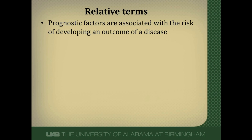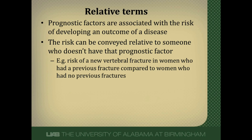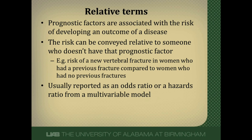Prognostic factors are associated with the risk of developing some outcome from the disease, and this risk can be conveyed relative to someone who doesn't have that prognostic factor. For example, the risk of a new vertebral fracture in a woman who had a previous fracture compared to a woman who had no previous fracture. This is usually reported as an odds ratio or a hazard ratio, depending on the type of multivariable model used.